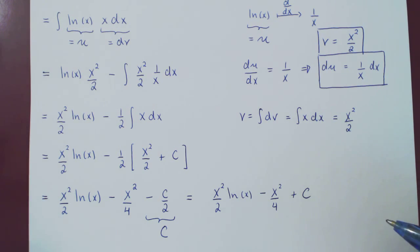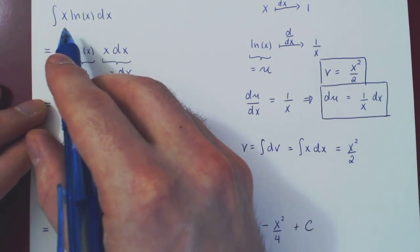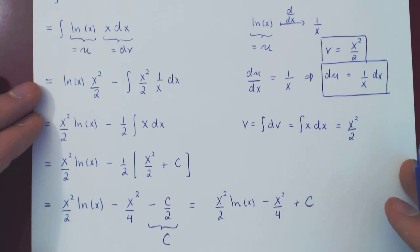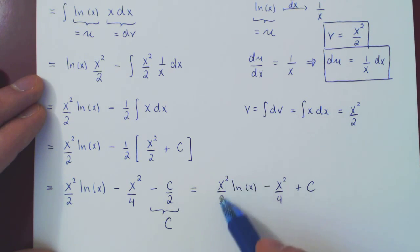And so, that's it. So we can write in our conclusion, the integral of x ln of x dx, using integration by parts, is x squared over 2 ln of x, minus x squared over 4, plus c.